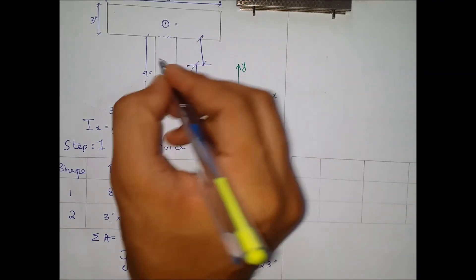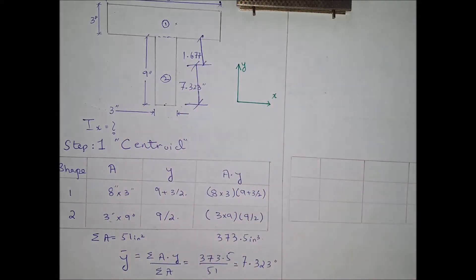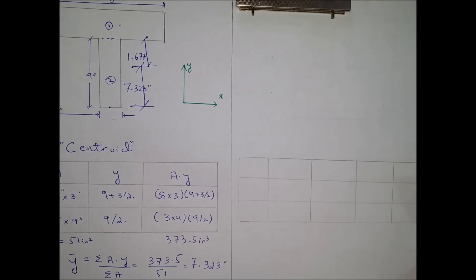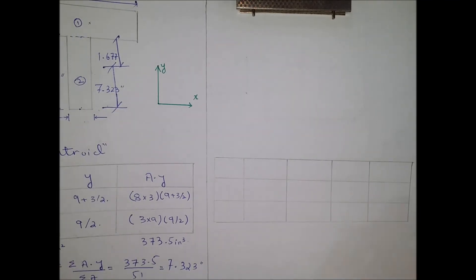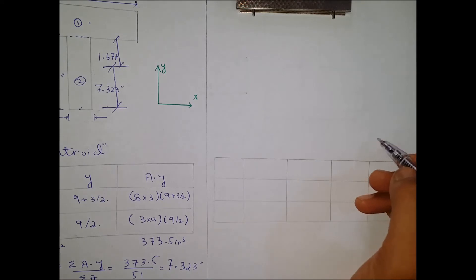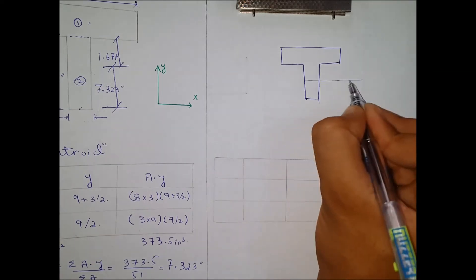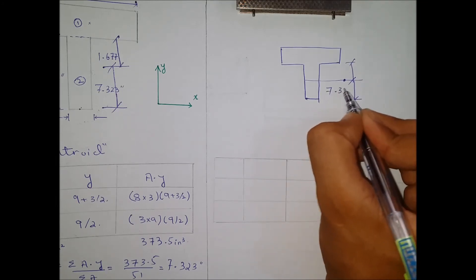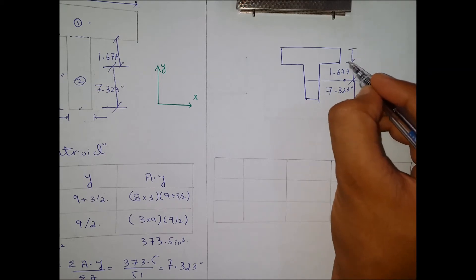This distance will be obtained by subtracting 9 inches from the centroid location. For the calculation of moment of inertia, we draw a rough figure of this cross-section, locating the centroid which we already calculated at 7.323 inches. The remaining distance is 1.677 inches, and 3 inches is the given dimension.